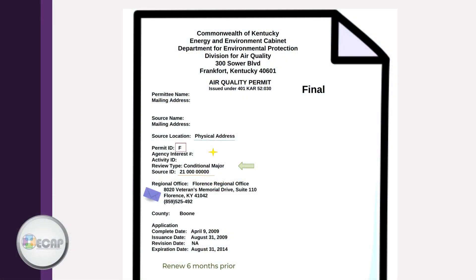This is the cover page. On it you will find the permittee and source name and mailing address, which may be the same as the source location where the facility resides — not a P.O. box but rather a physical address. The permit ID, which starts with an F, G, S, or V depending on the type of permit. The agency interest number, which is a very important identifier when dealing with the Department for Environmental Protection.